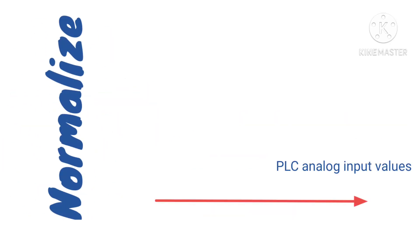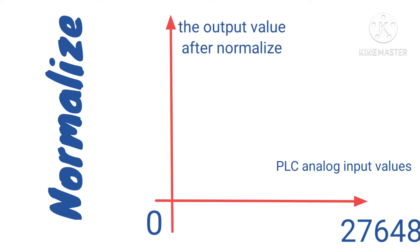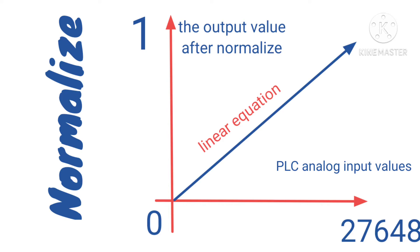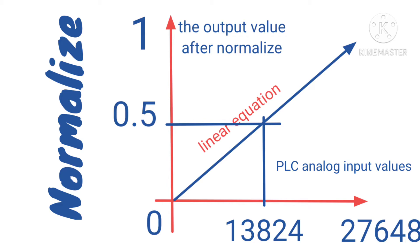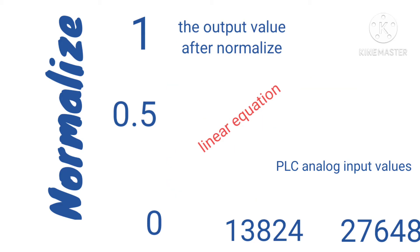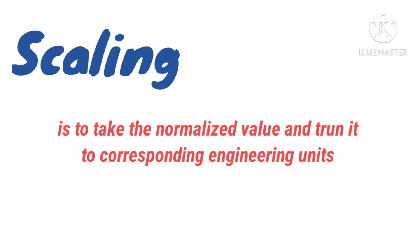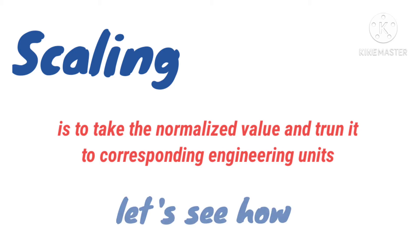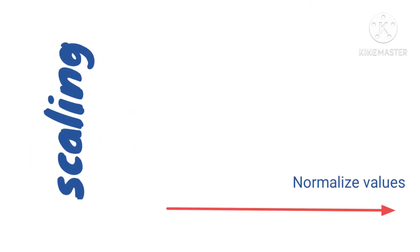Normalize is to transform an analog signal from this scale to this scale. This drawing shows how the normalized instruction works. Scaling is to take the normalized value and turn it into engineering units. This drawing shows how the scaling instruction works.